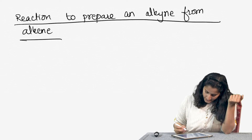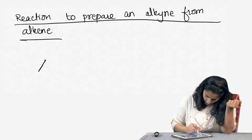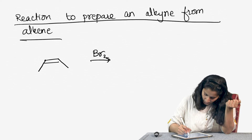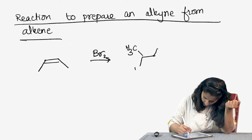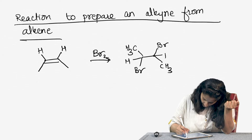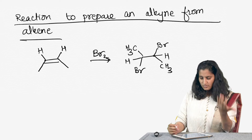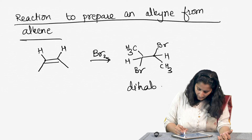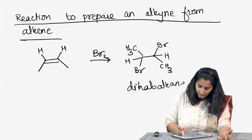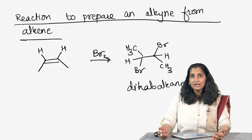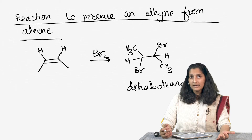Let's take an alkene and add bromine across this particular molecule. What we have formed is a dihaloalkane. One thing to remember is that this is not a geminal dihalide — it is a vicinal dihalide.